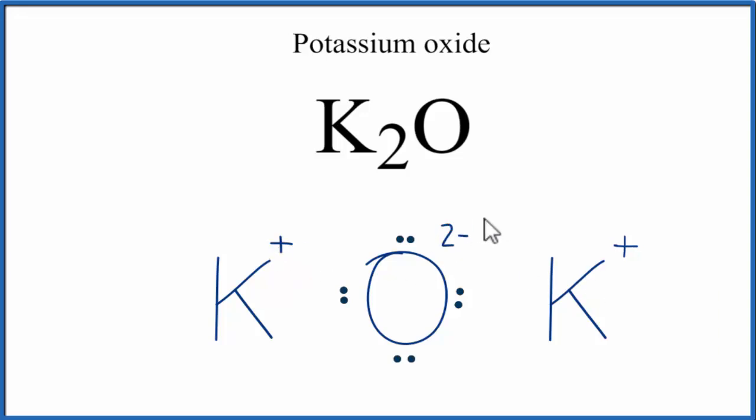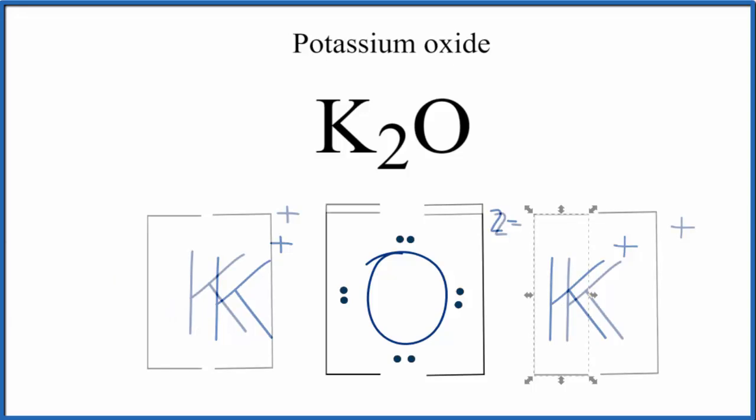The pluses and the minuses here, those attract, and that's what makes the ionic bond. Let's put brackets around the oxygen here. And you'll often see brackets around the positive ion. And that makes this the Lewis structure for K2O, potassium oxide.